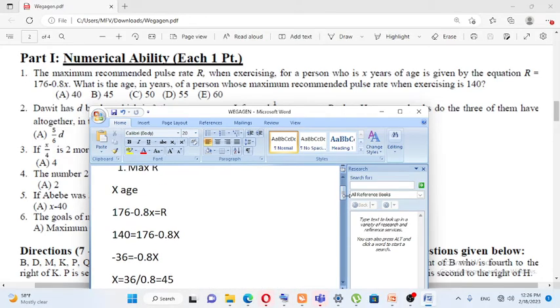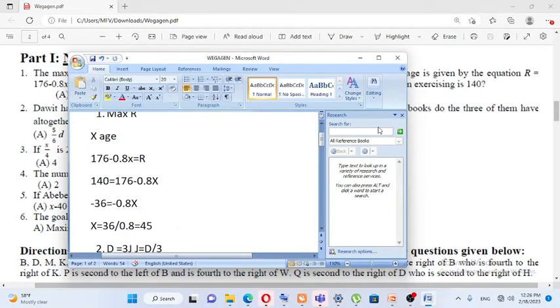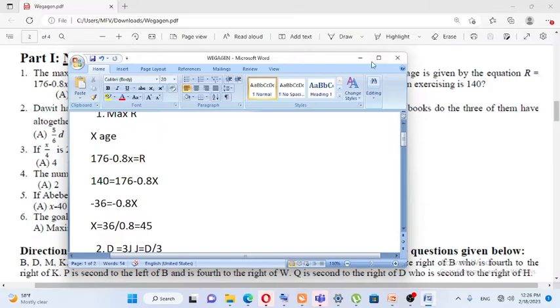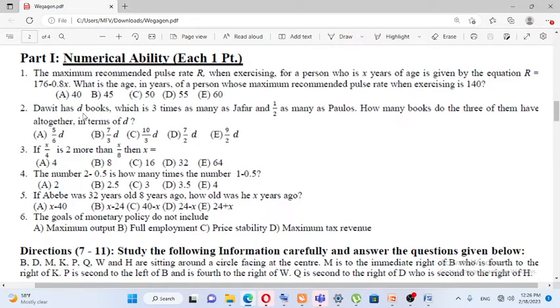The formula of the equation is that R is equal to 176 minus 0.8X. So, X is equal to 36 over 0.8X.